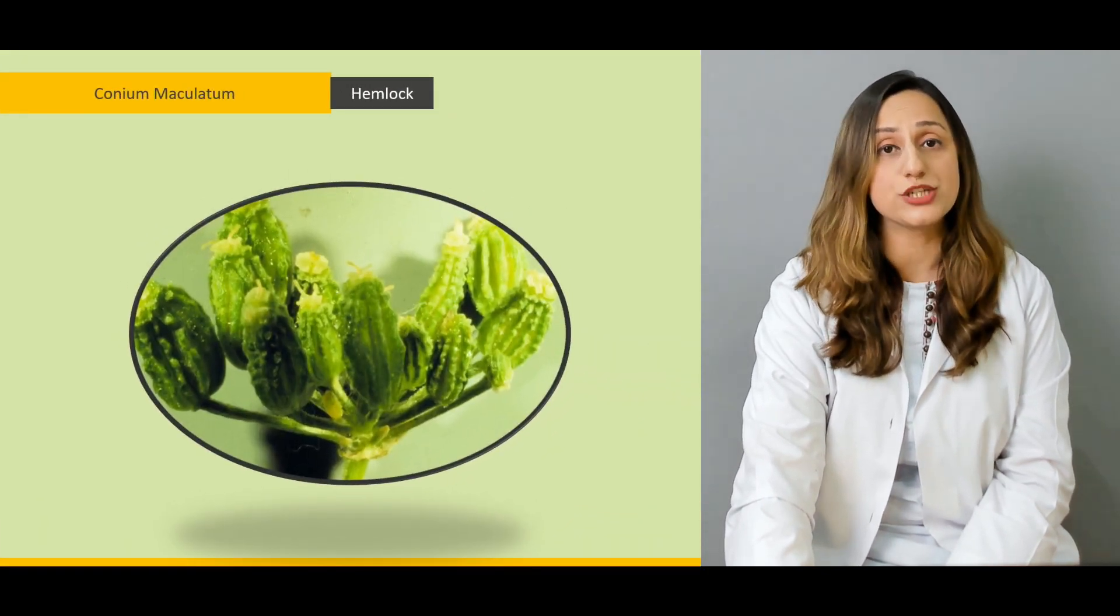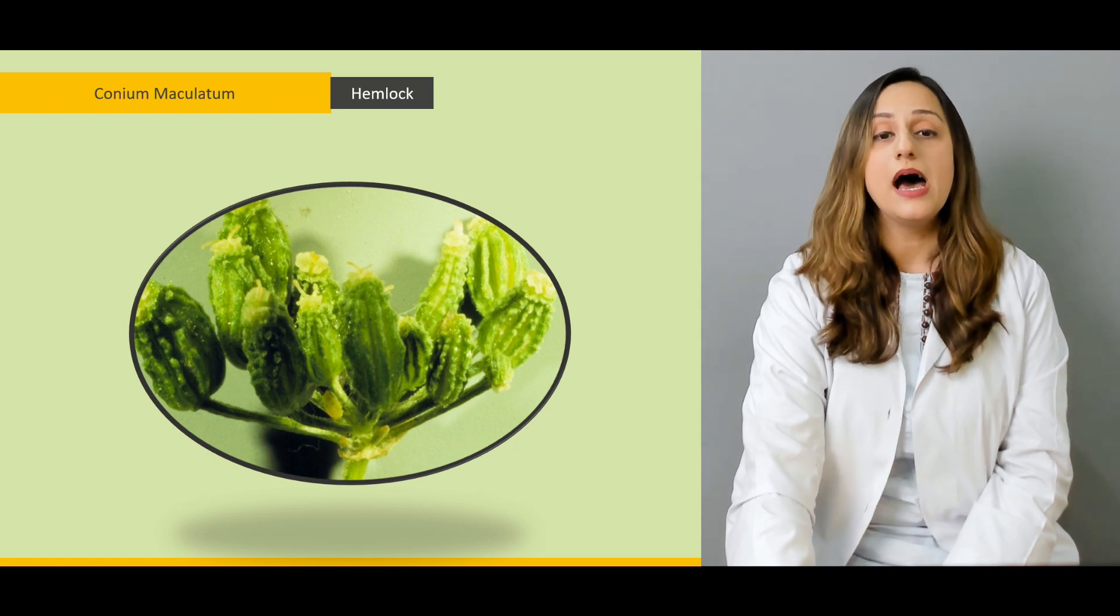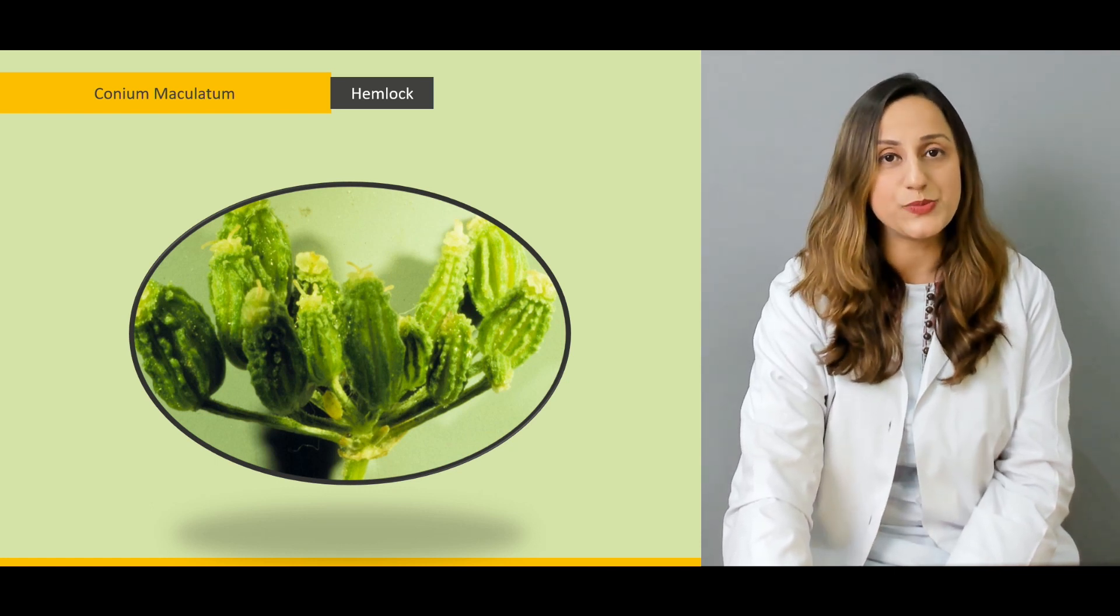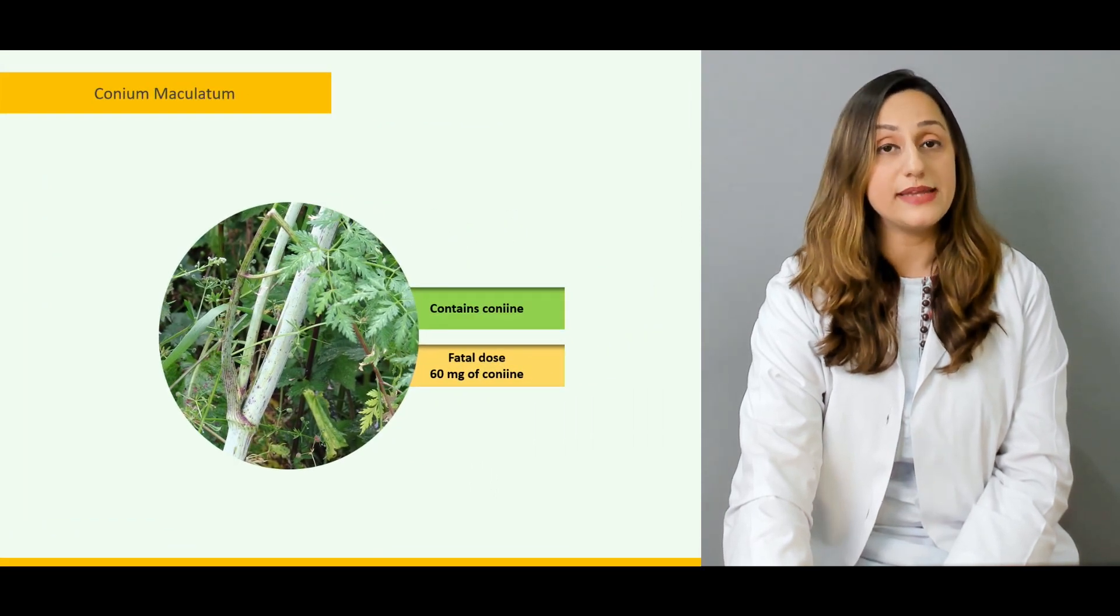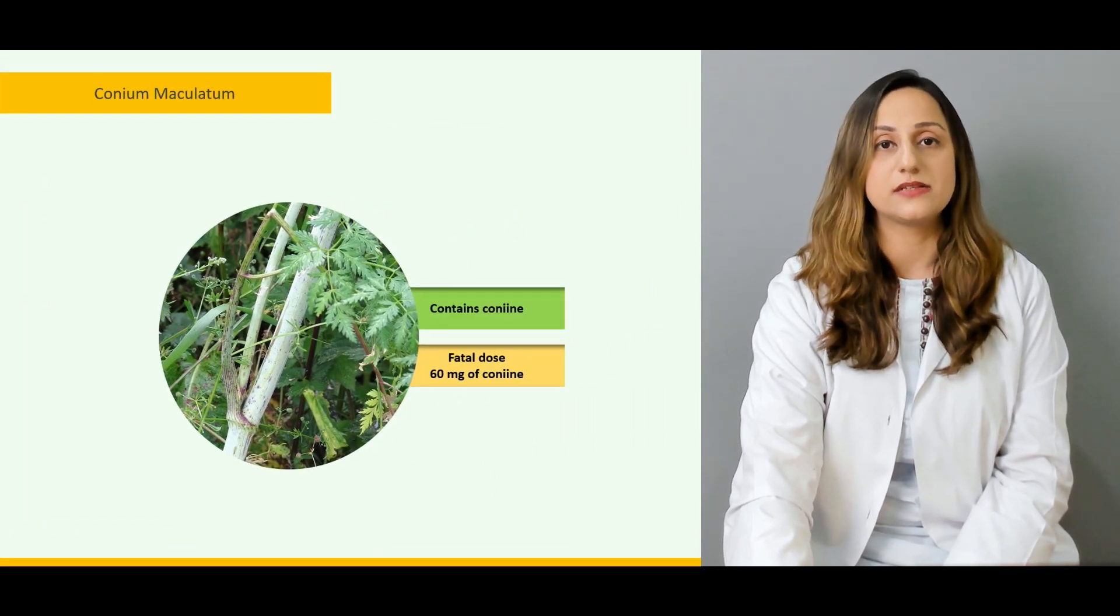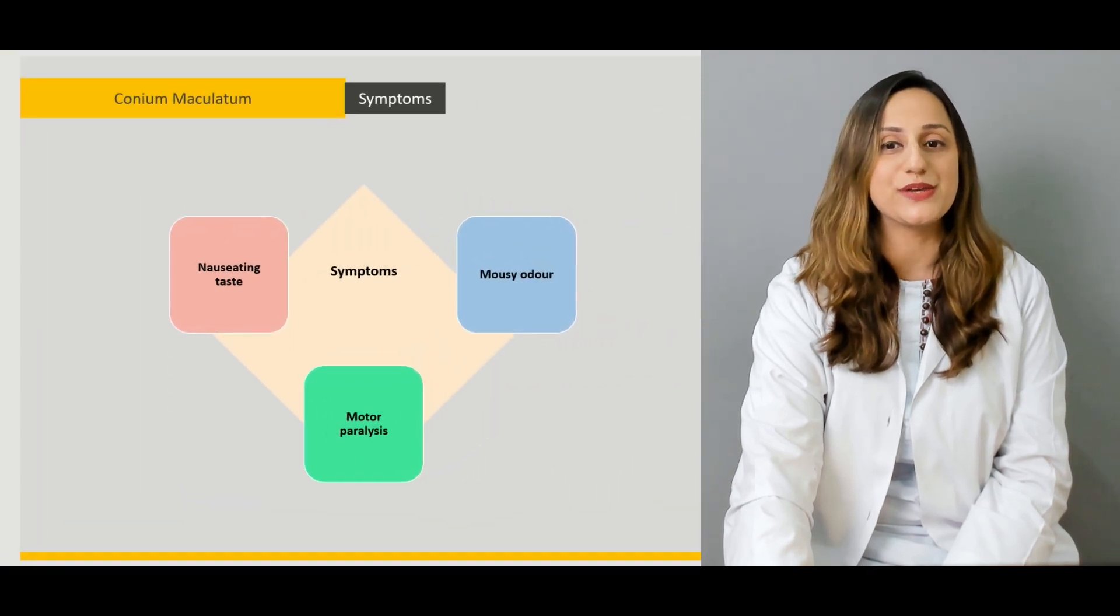Then a very important poison known as Conium maculatum will be discussed, which is also known as hemlock. The active principles and its fatal doses and fatal periods are also given.